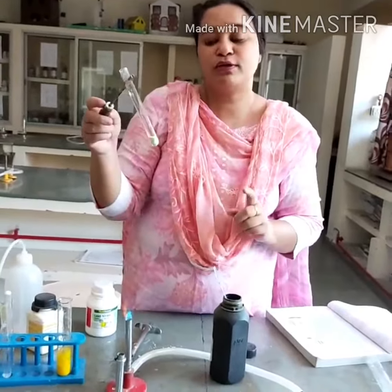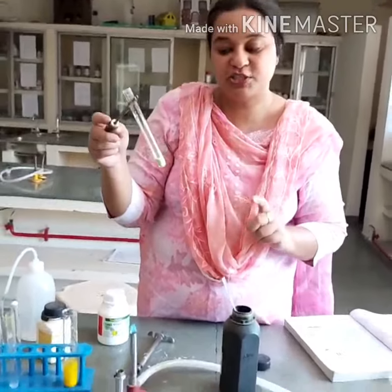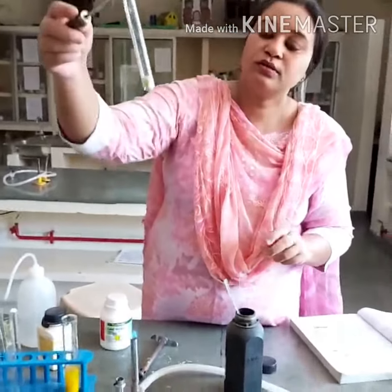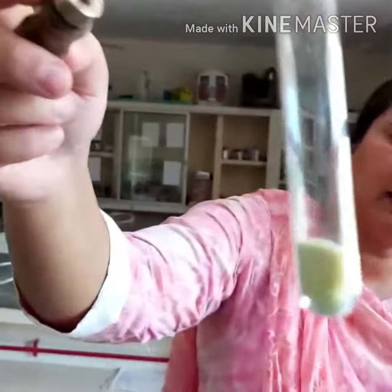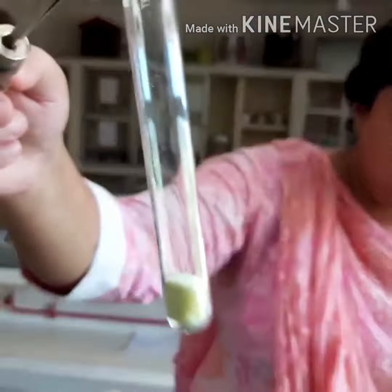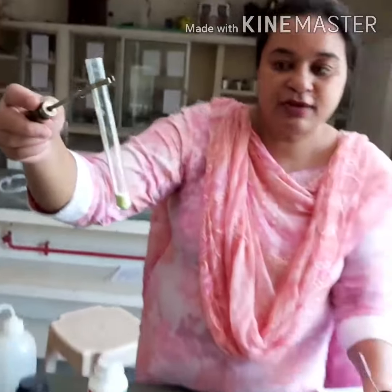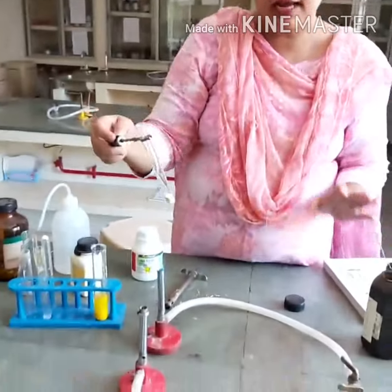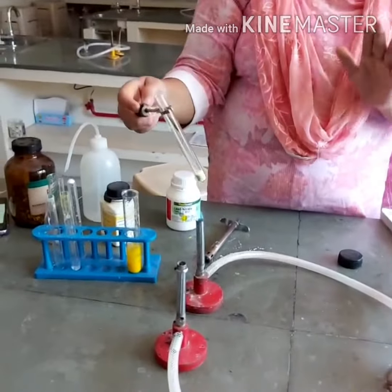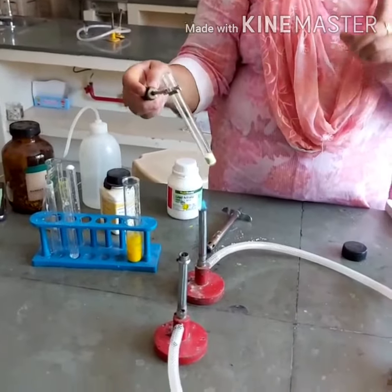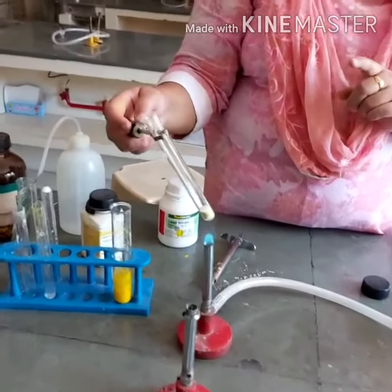Ferrous sulphate is green in color because of the presence of water of crystallization. This salt is green in color. Now I'm going to heat it. As I told you in the lecture, when we heat it, first it will become anhydrous ferrous sulphate.